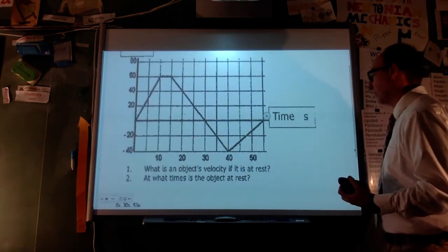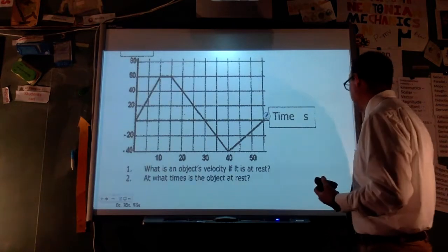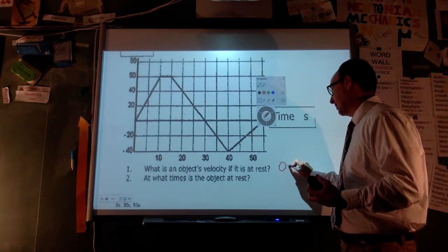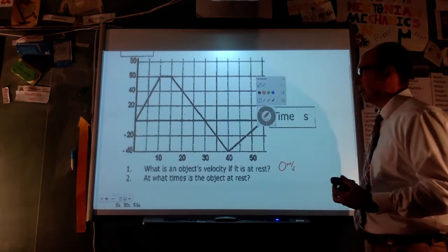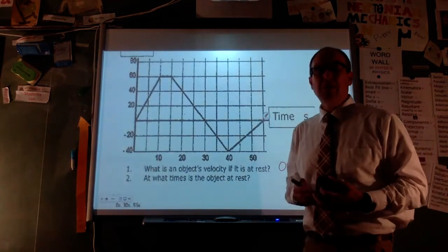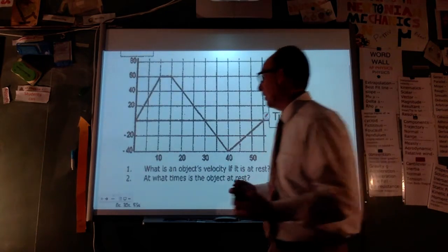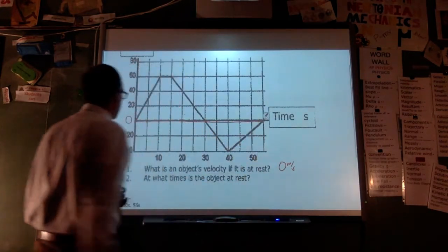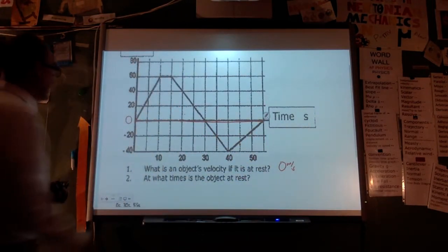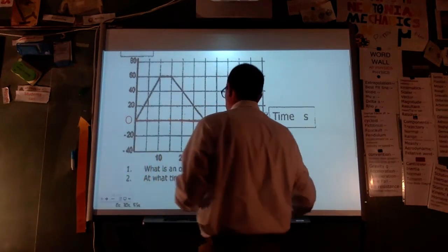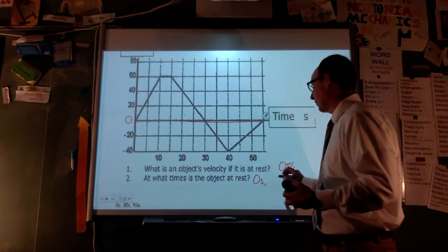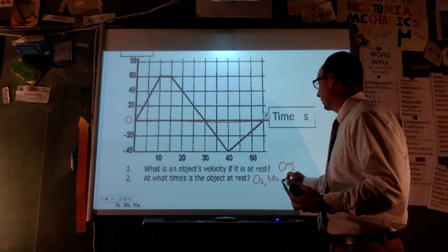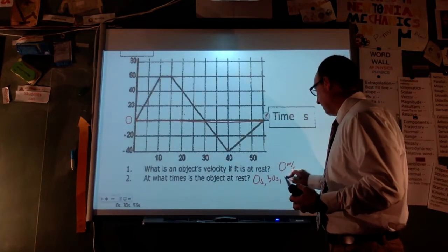First question: what is the object's velocity if it is at rest? An object at rest has a velocity of zero meters per second. On this graph, that occurs when we're on the zero-velocity line — at zero seconds, 30 seconds, and 55 seconds.